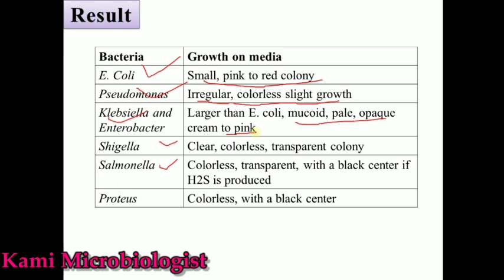Shigella produces clear, colorless, transparent colonies and is a non-lactose fermenter. Salmonella is also a non-lactose fermenter, but when it grows it produces H2S, giving colonies a black appearance. Proteus mostly cannot grow because bile salt is present; if bile salt is removed it can grow, and shows colorless colonies with black centers, also a non-lactose fermenter.